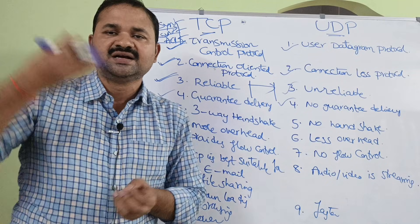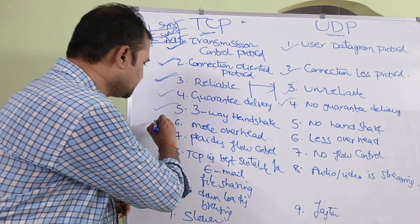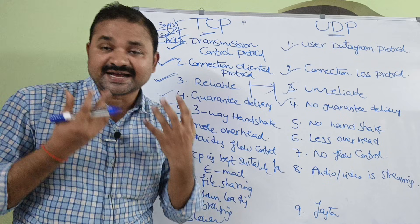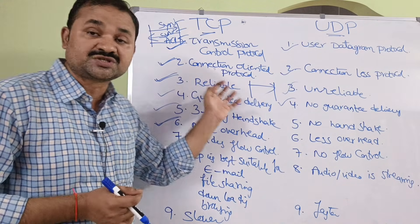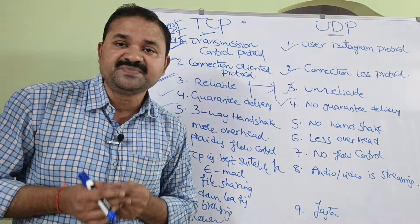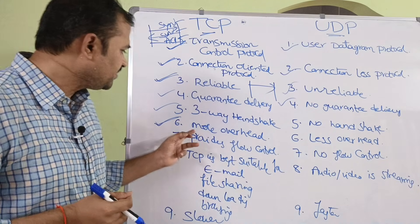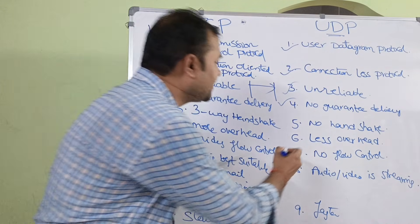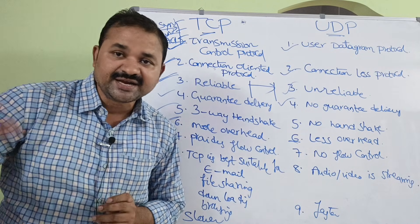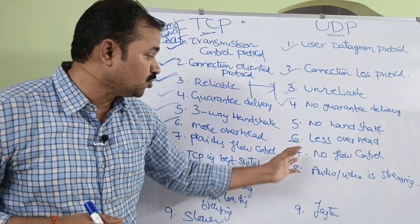If the sender knows the receiver's port number, it can directly send the segment. Next, in TCP there is more overhead, because a connection must be established and reliability must be ensured — requiring acknowledgements, sequence numbers, and retransmissions if a segment is lost. Whereas in UDP there is less overhead, because there are no acknowledgements, no sequence numbers, and no retransmissions.